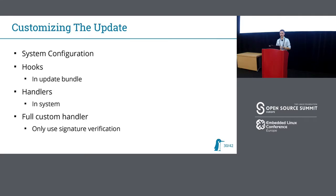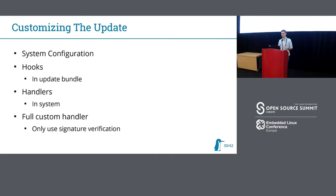Apart from what you have in the system configuration, RAUC also has more customization. You can place scripts in the bundle itself that handle custom installation steps or do post- or pre-installation operations — these are called hooks. You can also have predefined handling on the target — scripts executed as post- or pre-installation called handlers in RAUC. And if required, we also have the ability to fully replace the default installation handling, so you use RAUC just as a signed container and do full custom handling inside.